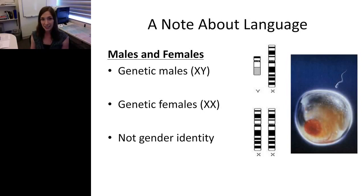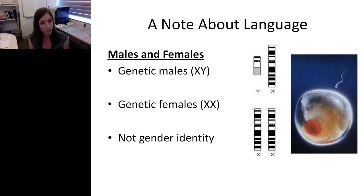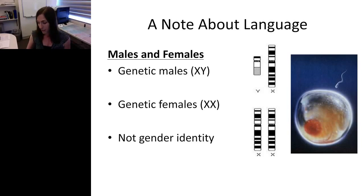I want to take a moment to note on language, especially for clinicians dealing with patients. Throughout this talk, when I discuss my research, I will talk about genetic males — who have an X and a Y chromosome — and genetic females — who have two X chromosomes. The sex of an individual is distinct from their gender. While for many individuals sex and gender align, for a proportion of the population they do not. When I refer to males and females in this talk, I'm talking about genetic sex, not gender identity.